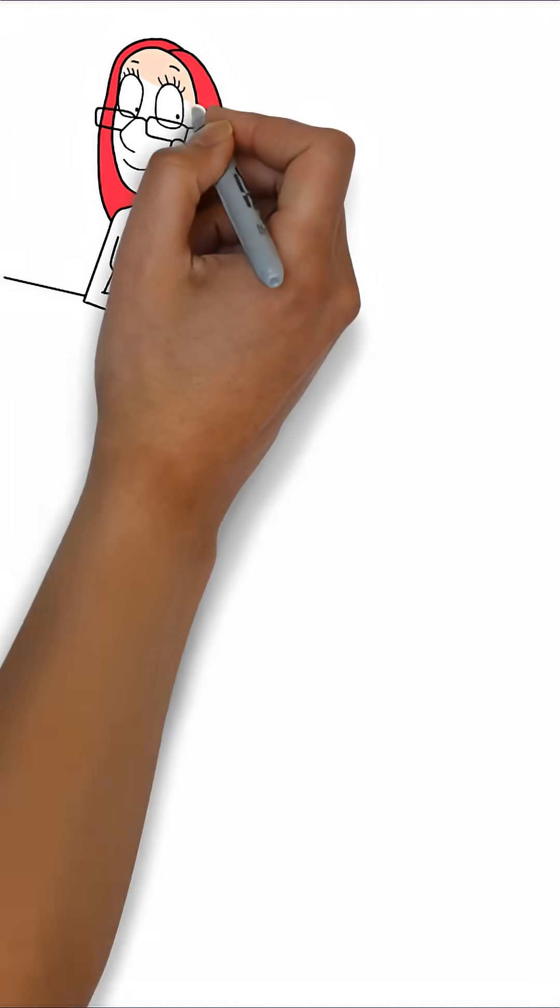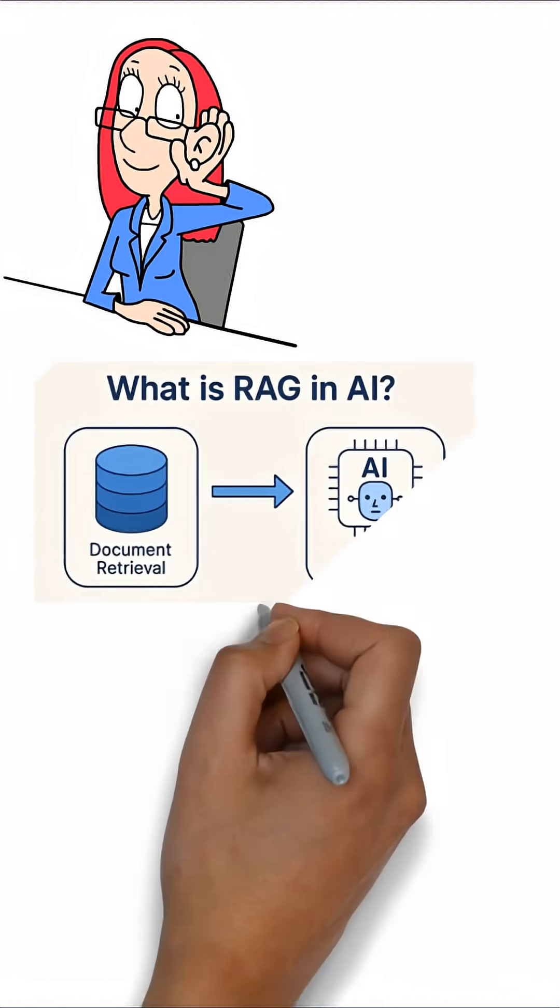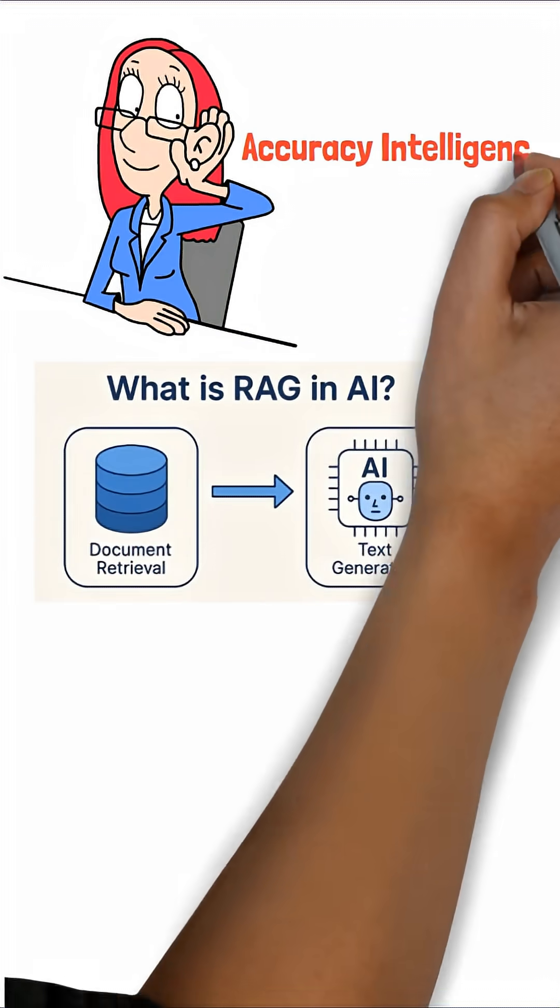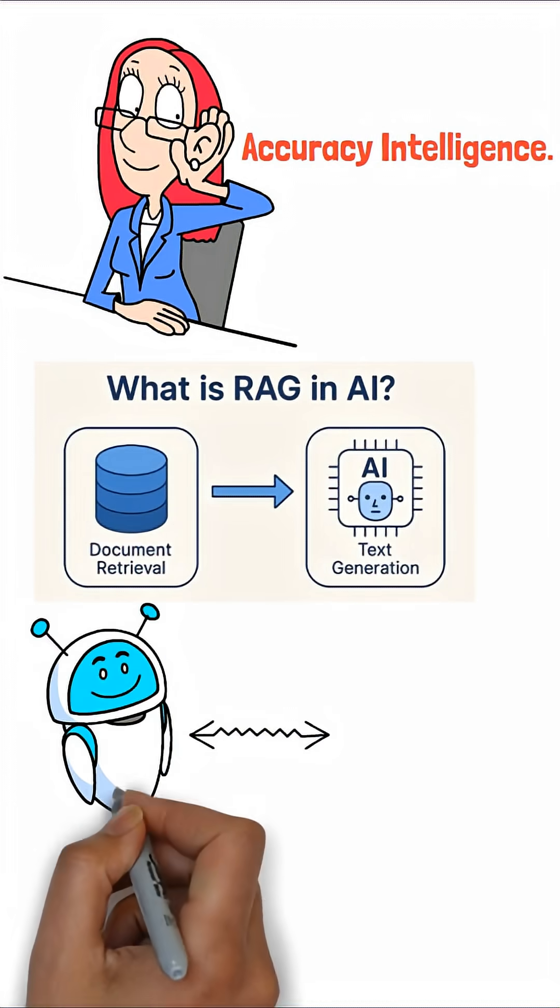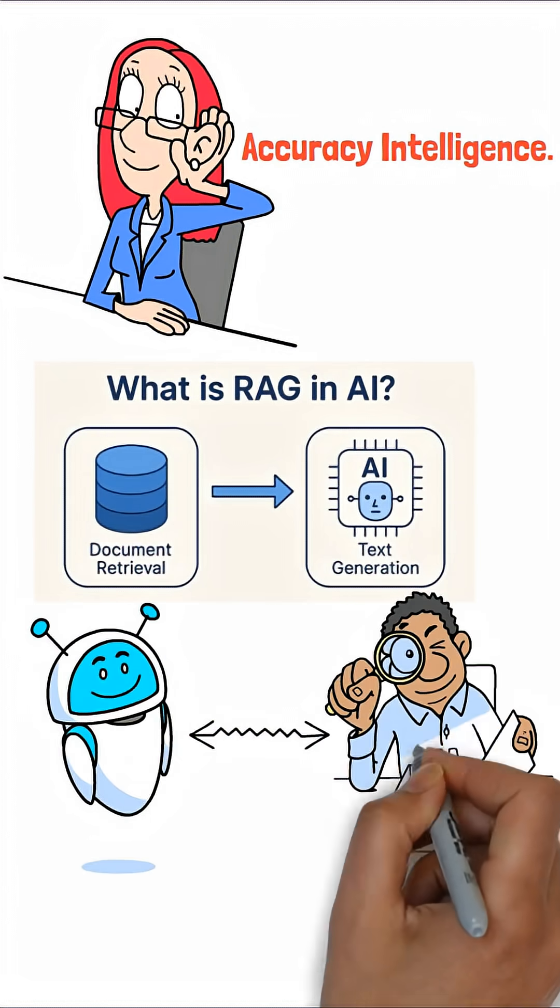So the next time you hear RAG, think beyond AI. Think accuracy intelligence. It's the missing link between AI's potential and your business's actual knowledge.